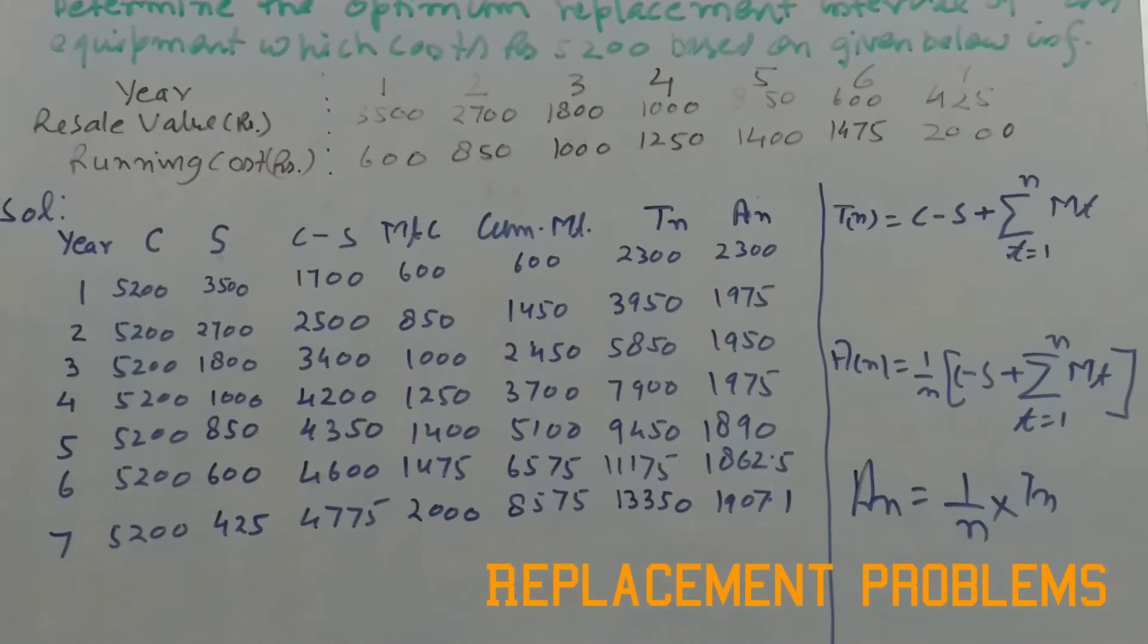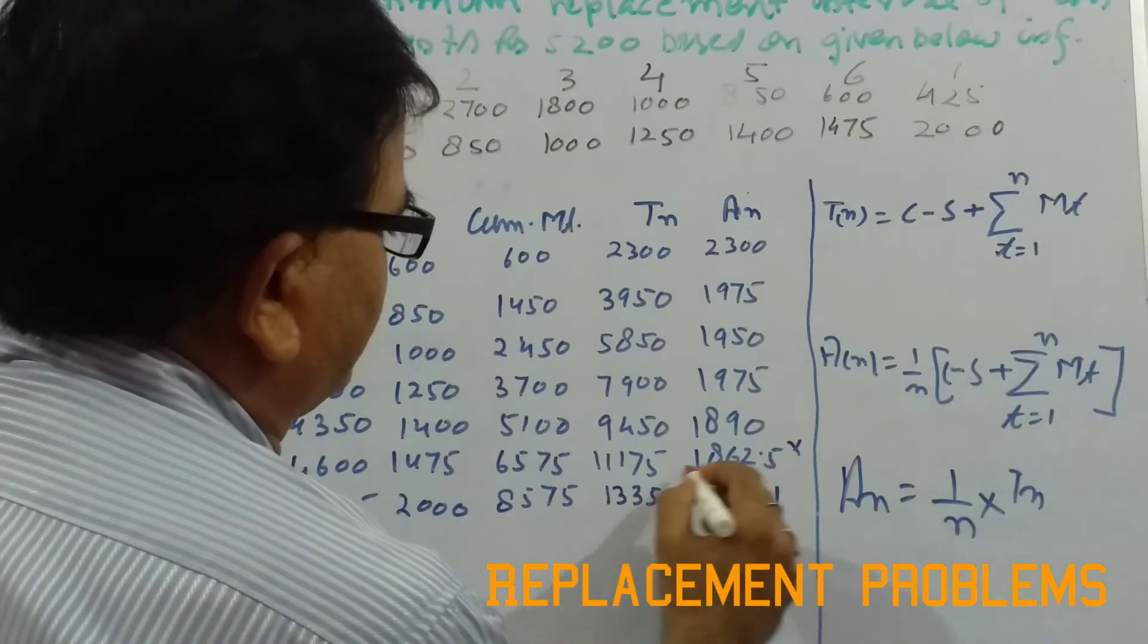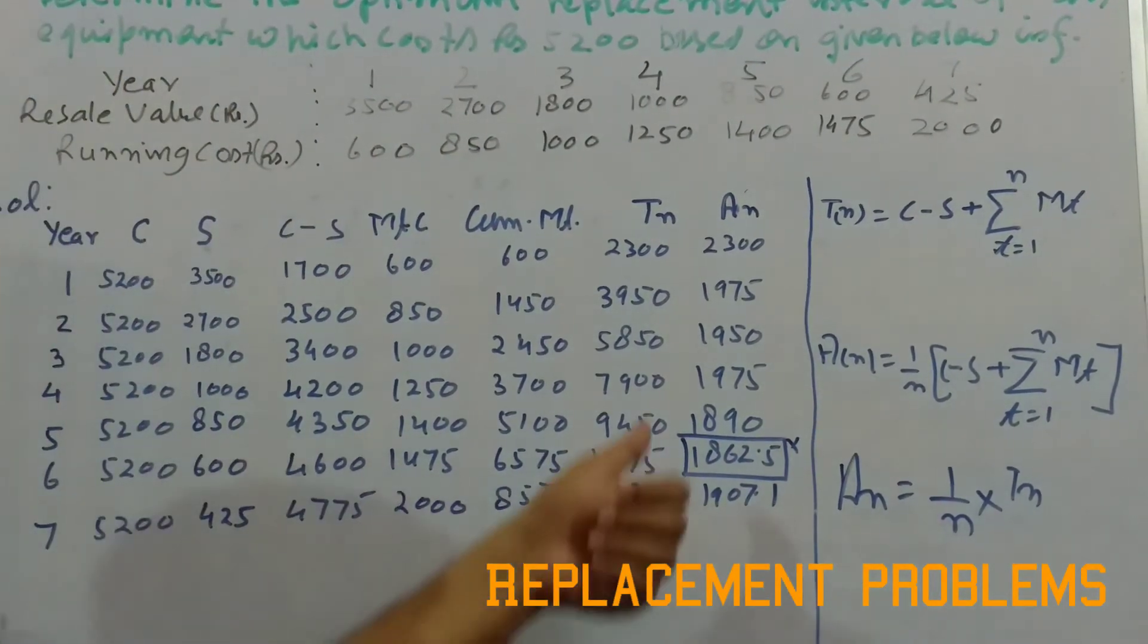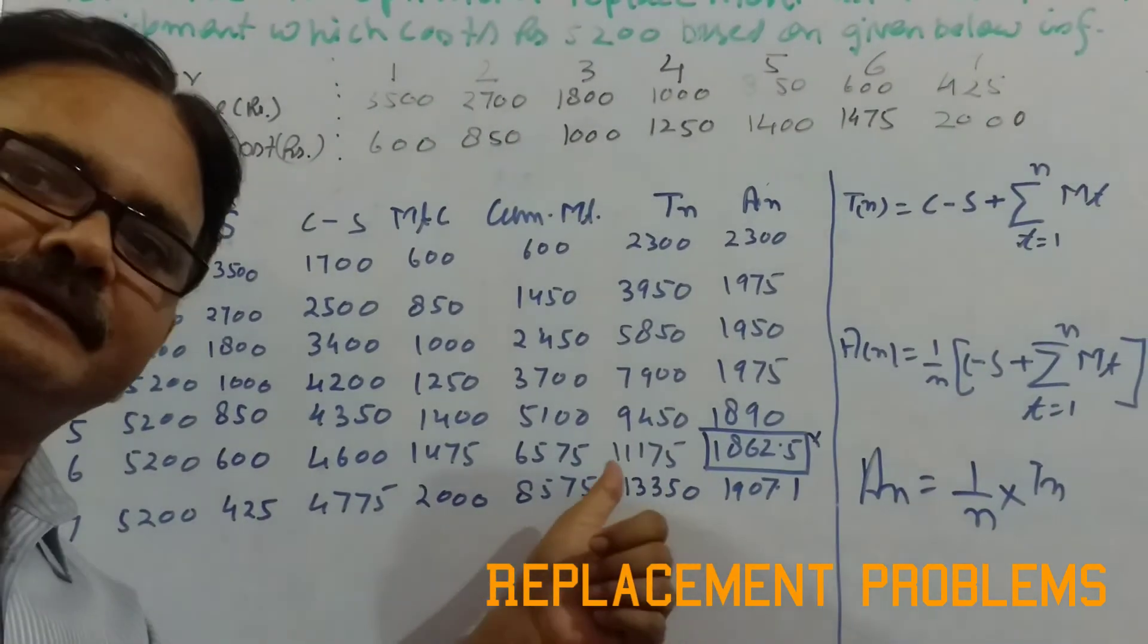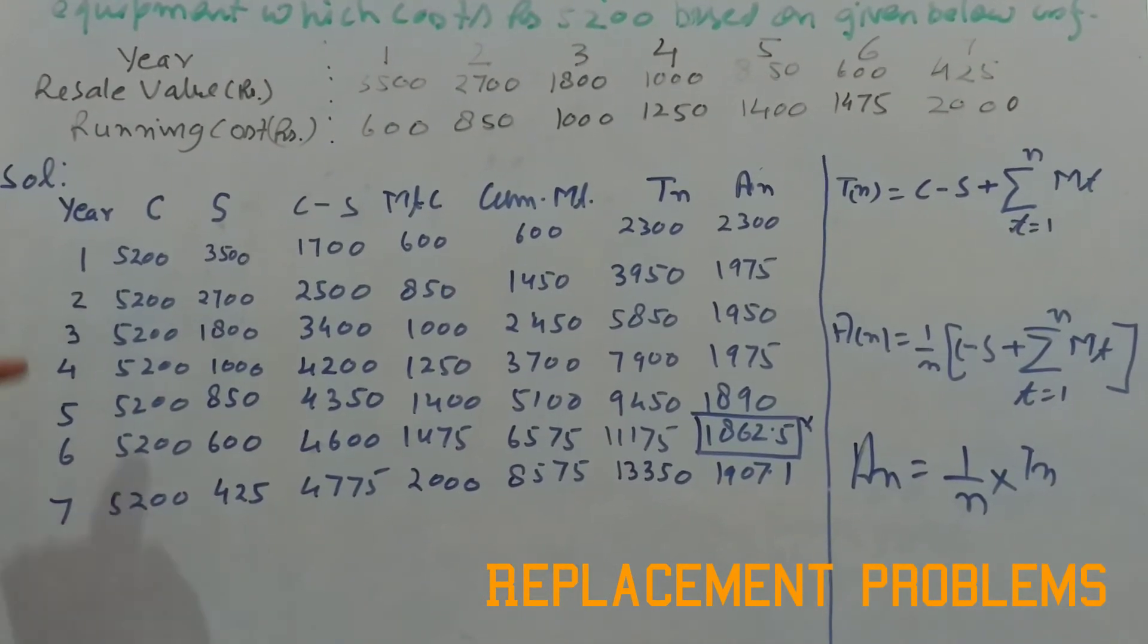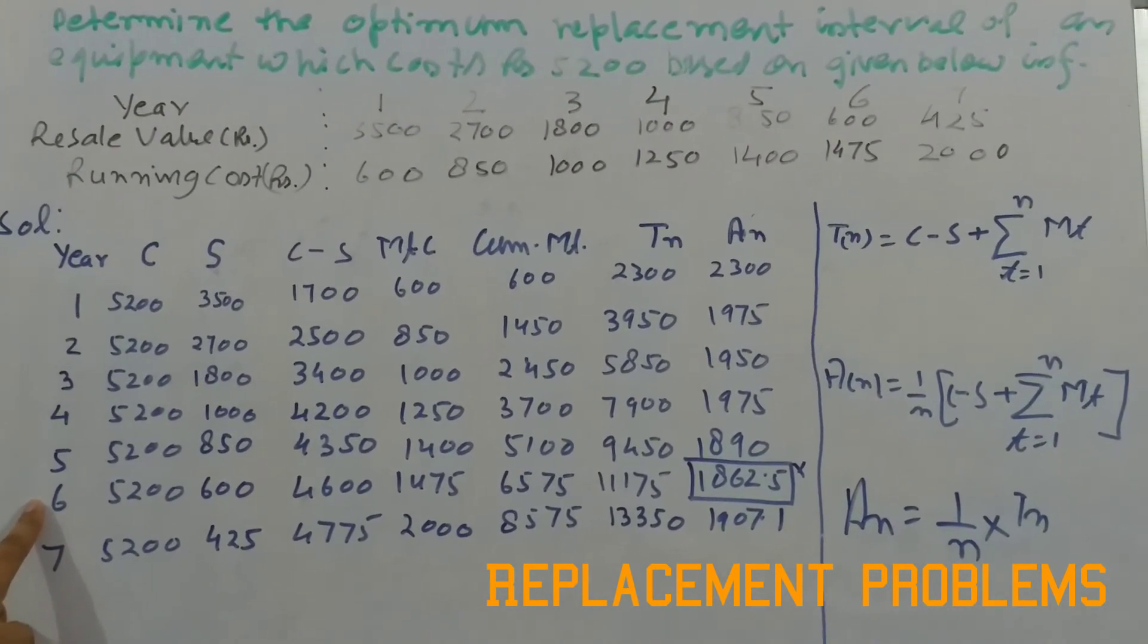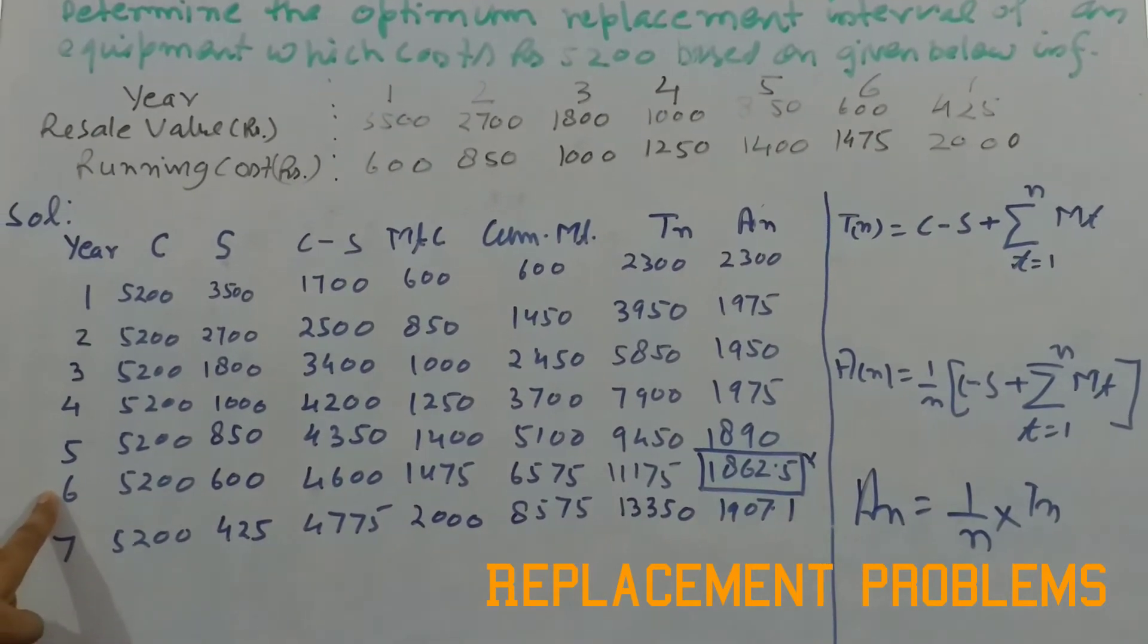Now if we look at the 6 years here, if you compare this figure, you will find that this is giving the least average cost. That means it indicates that this particular machine or equipment should be replaced in 6 years, and if it is done, then it will be highly economical for that particular company.